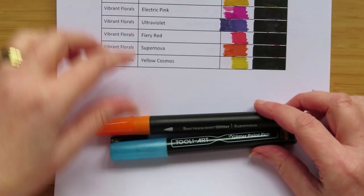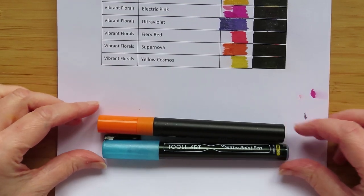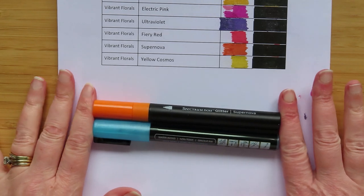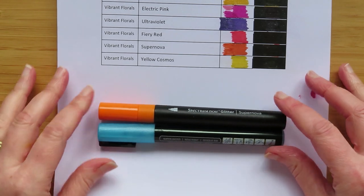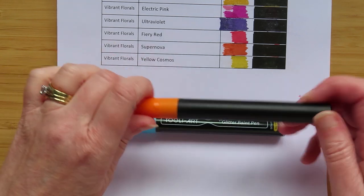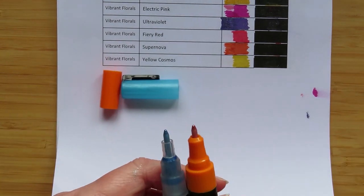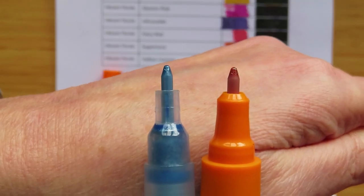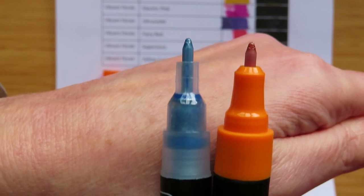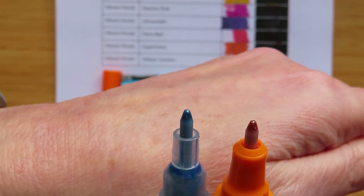So the way they look, they are sort of similar to each other. Both got black bodies, both about the same size. These lids have got a clip on them, these haven't. The tips are similar. The bit that holds the tip, it's not the same.